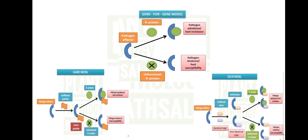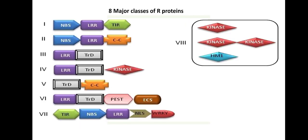Now let's start today's video. Here we will discuss the eight major classes of resistance gene or R protein. The classification of these R genes is done on the basis of motifs present in them. If you are not familiar with the term 'motif', think of it like a word — a word consists of many alphabets, and due to the arrangement of alphabets, a word is formed. Just like that, different motifs exist and due to the arrangement of motifs, a gene or resistance gene is formed.